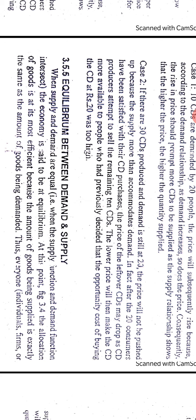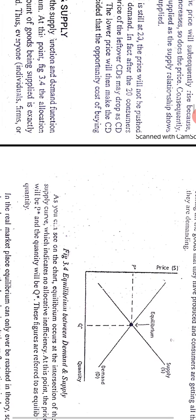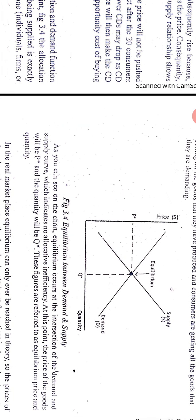We can see this in figure 3.4. The allocation of goods is most efficient because the amount of goods being supplied is exactly the amount of goods being demanded. You have plotted this graph. One increasing line is the law of supply, and the decreasing line is for law of demand. Where supply and demand intersect, that point is called equilibrium.